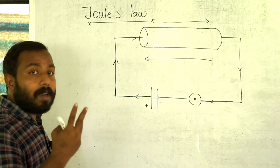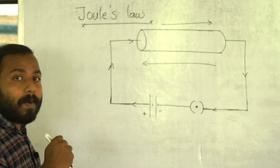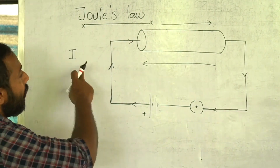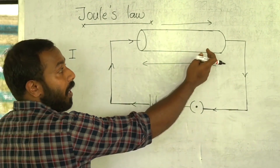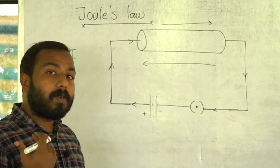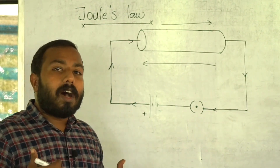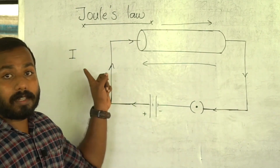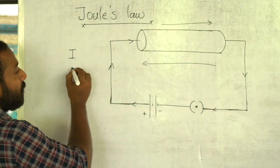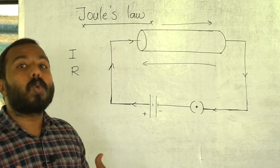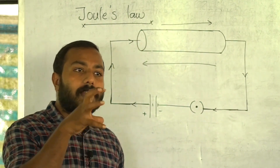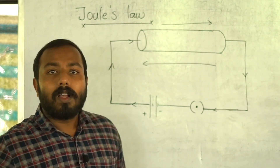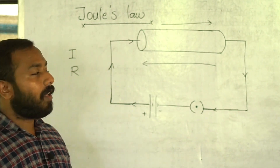The first factor that determines the heat generated is the current — the flow of electrons causes collisions, and more current means more collisions and more heat. The second factor is the resistance. Higher resistance will automatically increase the number of collisions, generating more heat.